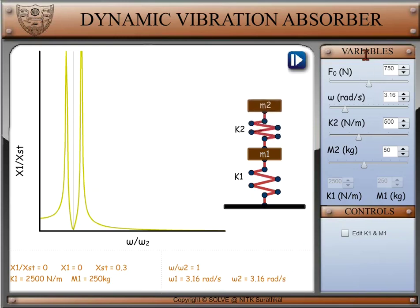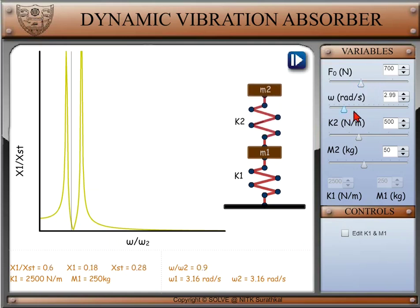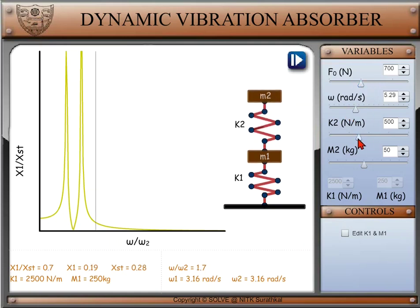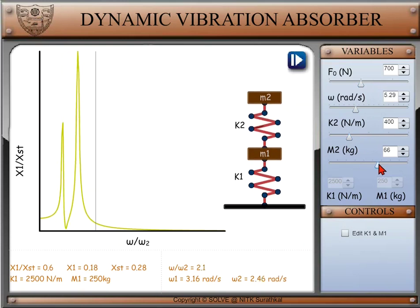In variable section, we can change the force F0, speed omega of the system, spring constant k2 of the second body, and mass m2 of the second body.